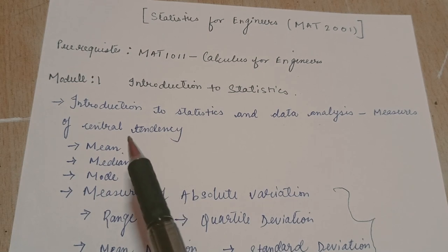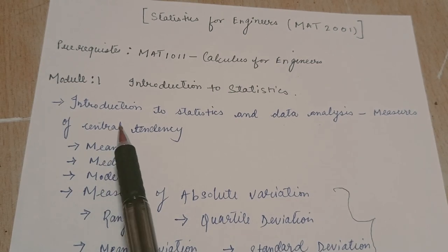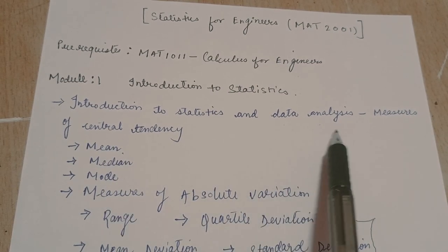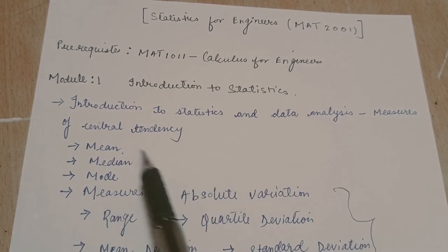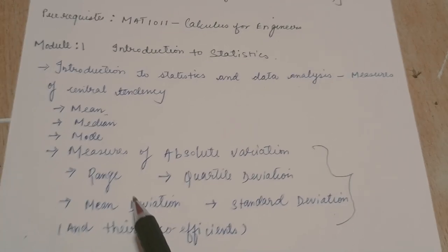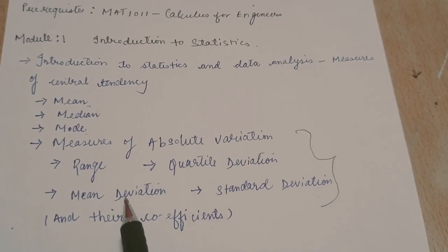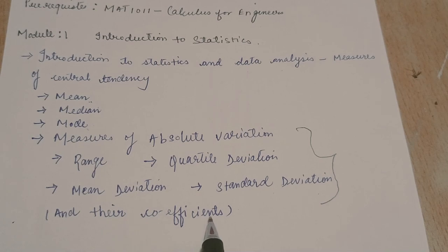So we would be starting with module 1, that is introduction to statistics. The very first topic is introduction to statistics and data analysis, measures of central tendencies. Now under this: mean, median, mode. Then comes measures of absolute variation - range, quartile deviation, mean deviation, standard deviation and their coefficients.